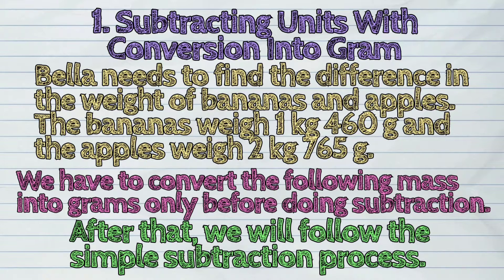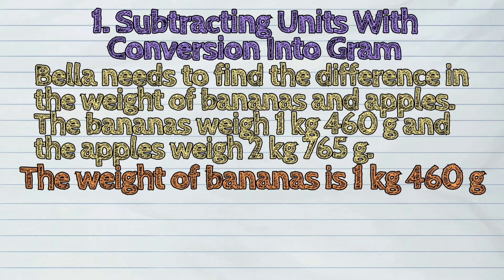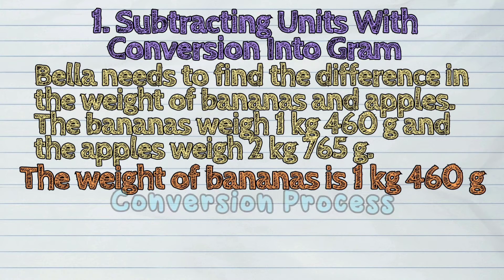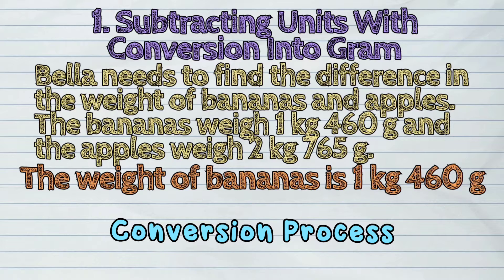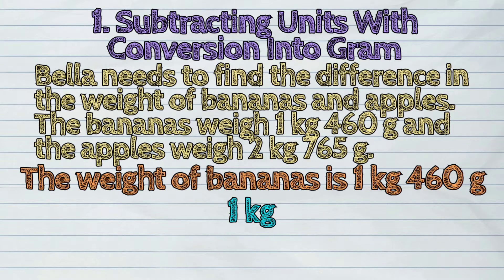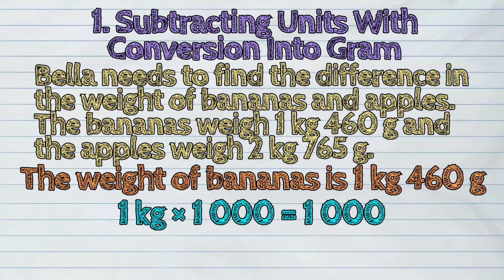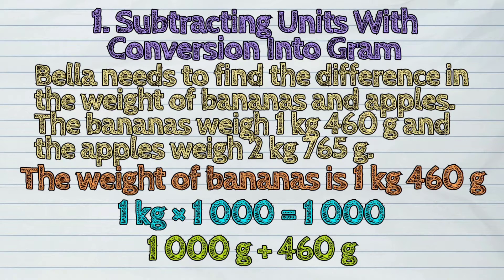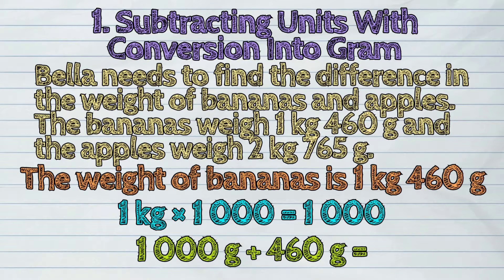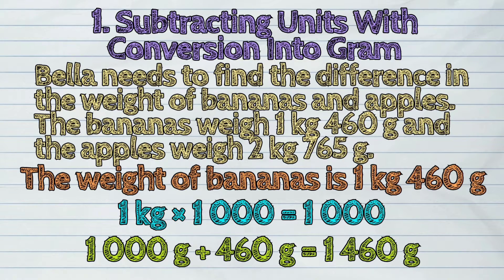The weight of bananas is 1 kilogram 460 grams. Let us start the conversion process. 1 kilogram times 1,000 is 1,000. Then we add 460 grams to our answer: 1,000 plus 460 grams is 1,460 grams.